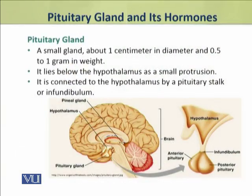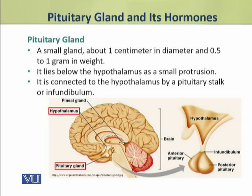The pituitary gland is a small gland about 1 cm in diameter and 0.5 to 1 gram in weight. It lies below the hypothalamus as a small protrusion. It is connected to the hypothalamus by a pituitary stalk which is known as infundibulum.